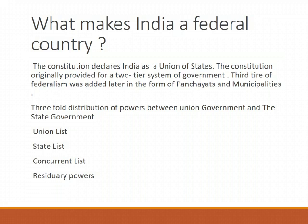The Concurrent List includes subjects of common interest to both the Union Government as well as State Governments, such as Education, Forest, Trade Unions, Marriage, Adoption, and Succession. Both the Union as well as State Governments can make laws on the subjects mentioned in this list. If any conflicts arise, then the law made by the Union Government will prevail in the country.